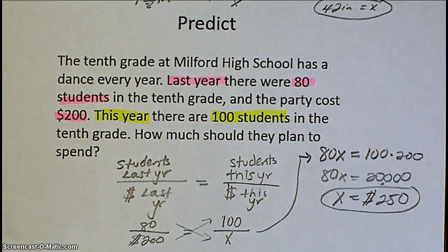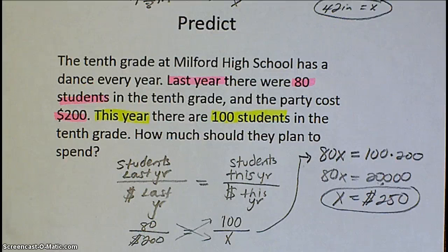If you did your cross products out correctly, you should find that this year it's going to cost them $250 to put on this dance for 100 students.